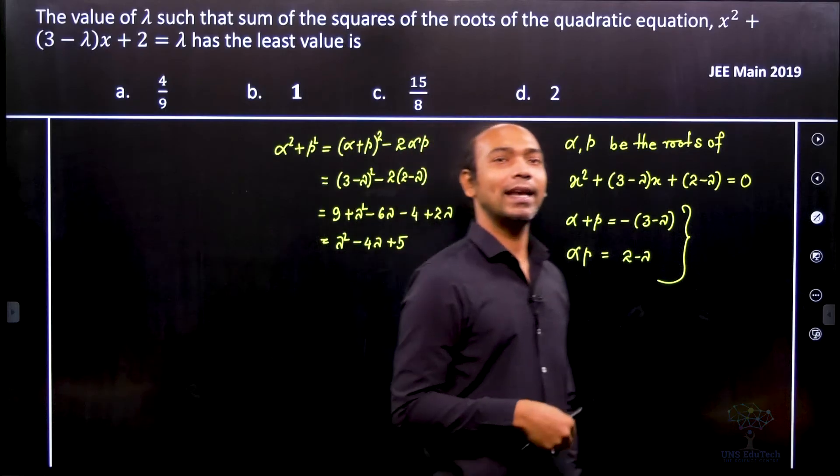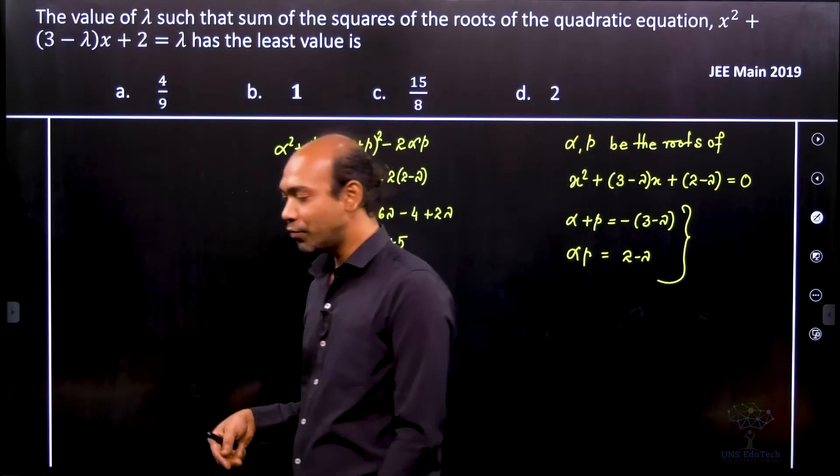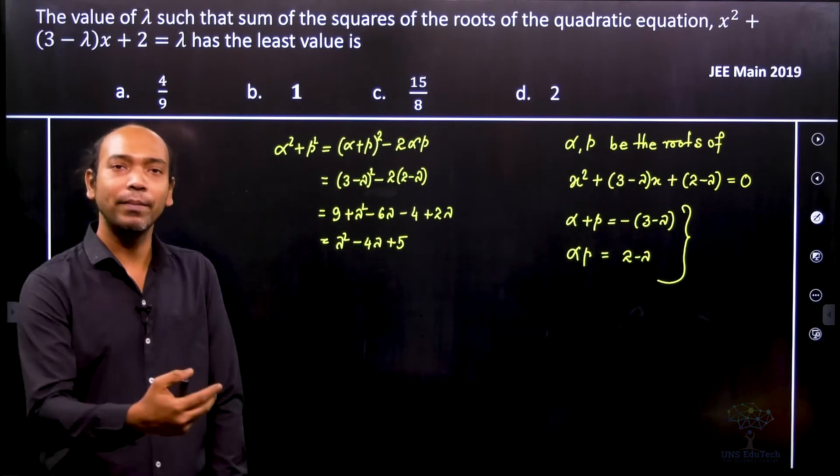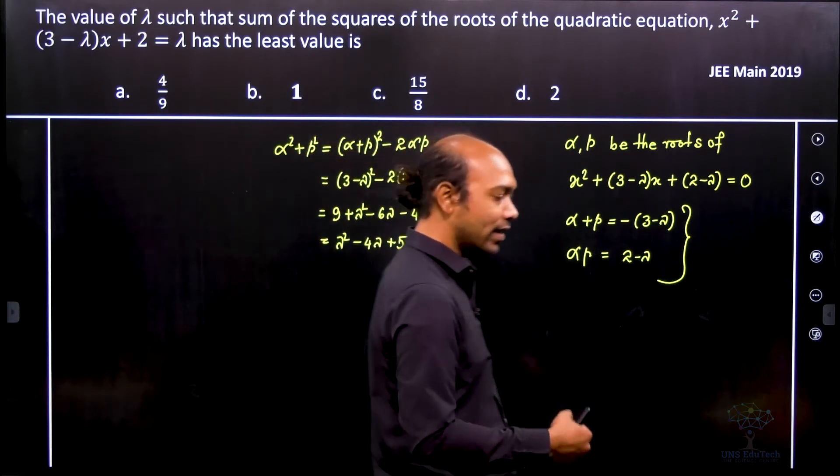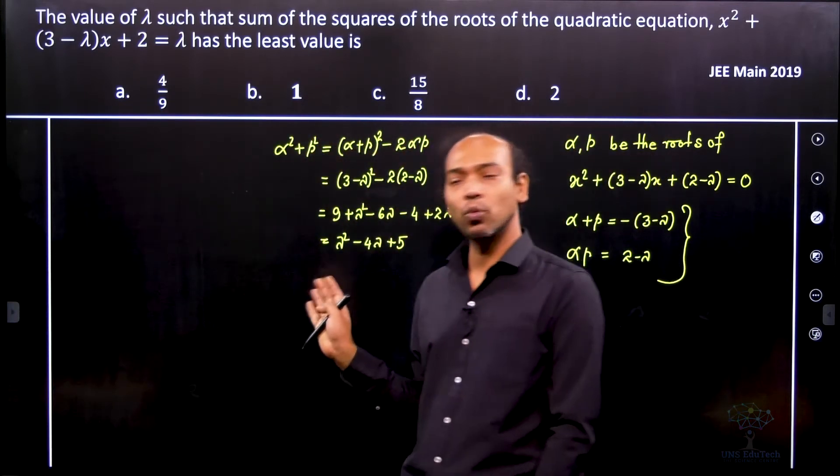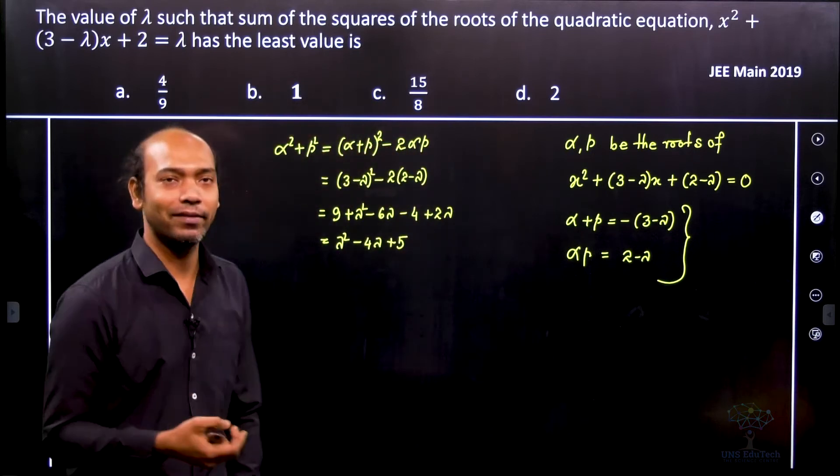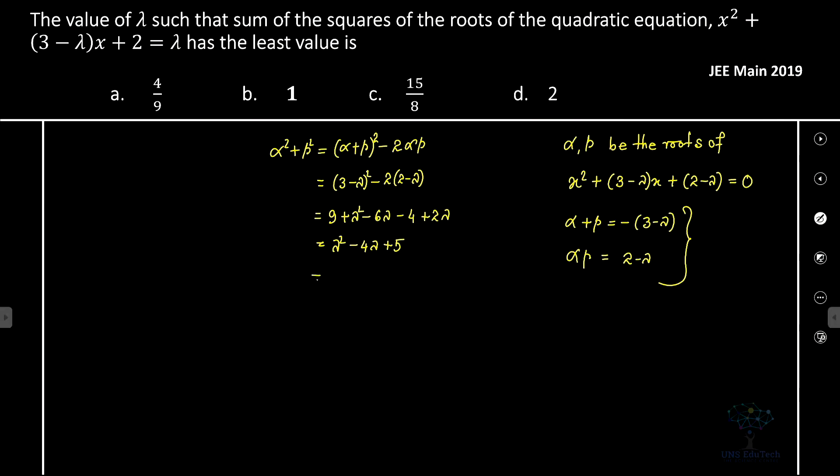Now here you can apply derivative to calculate the maximum or minimum value or the critical points and all that stuff, but as it is a quadratic equation we don't need that. So we can do the completing the square technique. Therefore it is lambda squared minus 2 lambda into 2 plus 2 squared plus 1, which implies lambda minus 2 whole square plus 1. That's it.